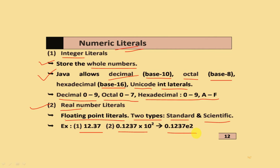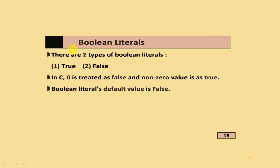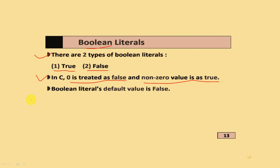Boolean literals: there are two types - true and false. In C programming, 0 is treated as false and a non-zero value is treated as true. In Java boolean literals, the default value is false.